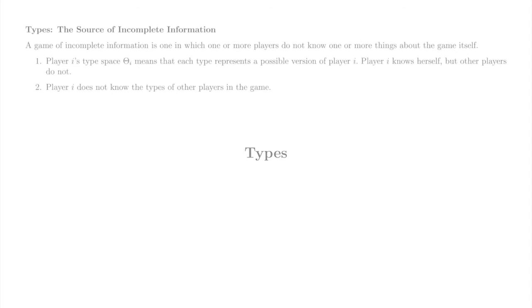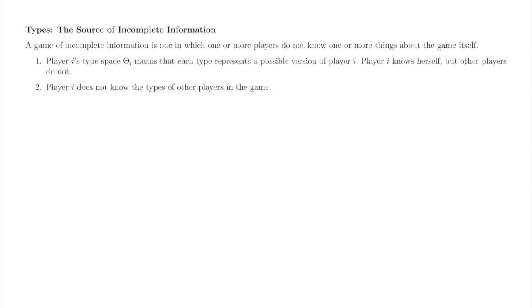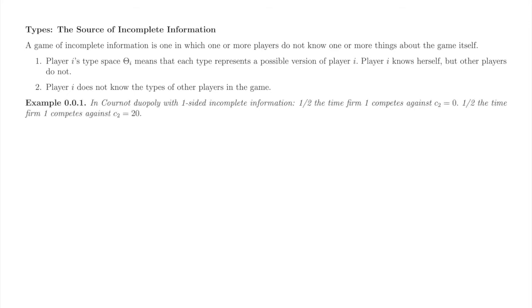We're going to spend some time now with types and beliefs, since they are the essence of an incomplete information game, and much of the equilibrium analysis from this portion of the course hinges on understanding them. Incomplete information means there is something about the game itself that is unknown to one or more players. In games of complete information, each player knew the structure of the game itself. We interpret incomplete information as incomplete information about the players. Each of Player i's types represents a possible incarnation of Player i. Each player knows herself, but is limited to her beliefs about others.